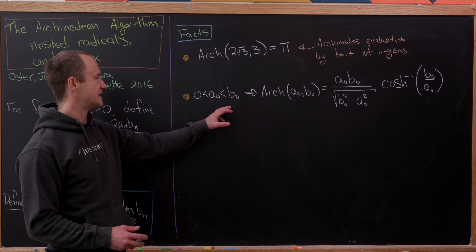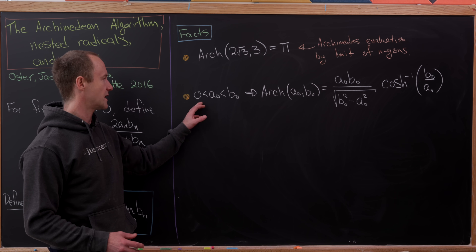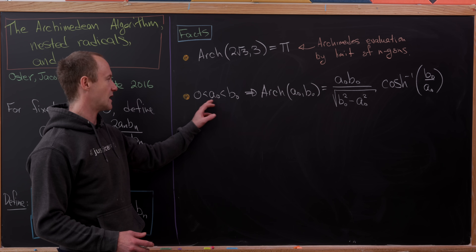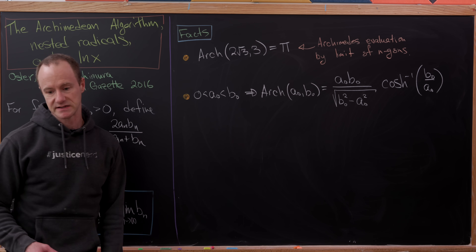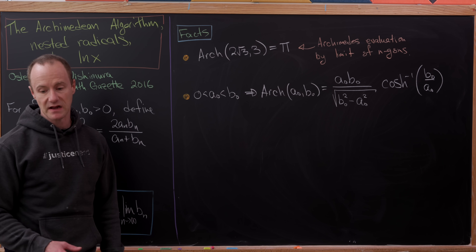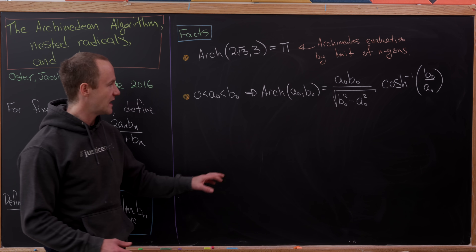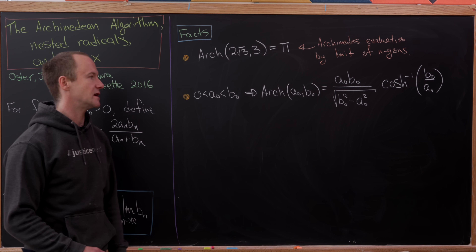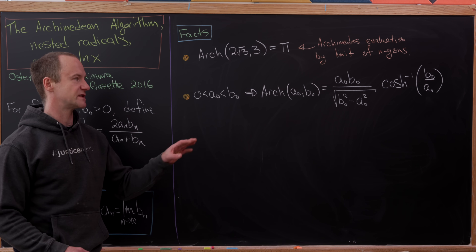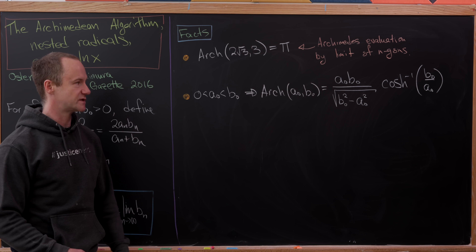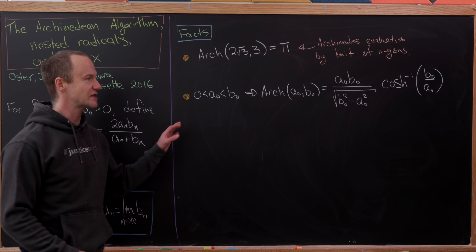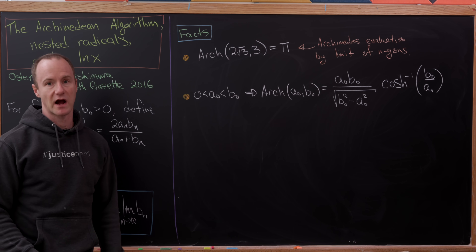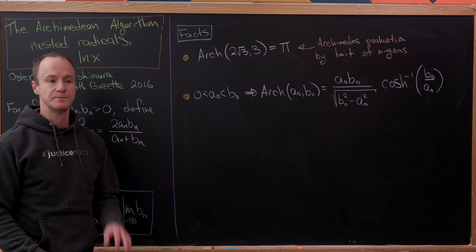If we have the ordering 0 < a_0 < b_0, then we can express the Archimedean mean in terms of the hyperbolic cosine function, which will be of particular use for our purposes.